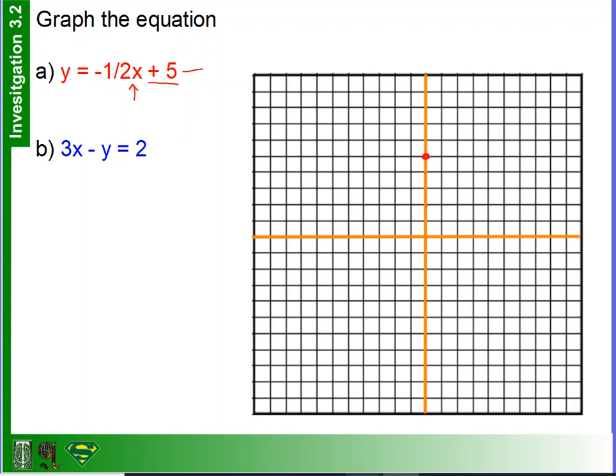The next thing I'm going to do is use what I know about slope. Now slope is equal to rise over run. And in this case, my rise is 1, my run is 2.